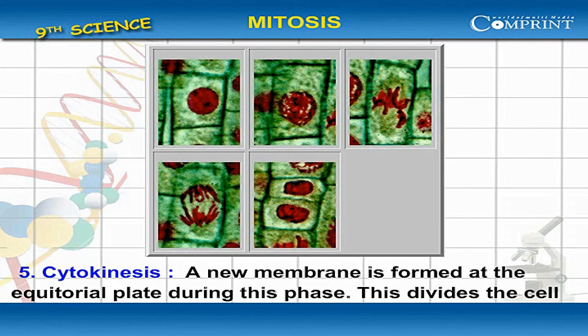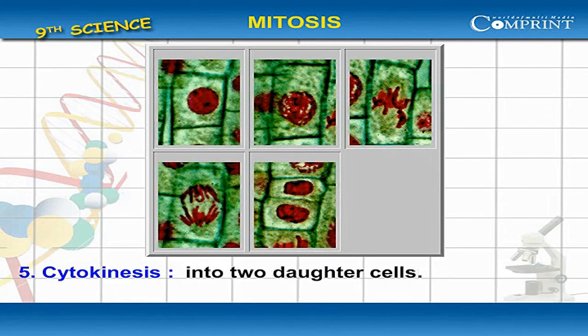Cytokinesis. A new membrane is formed at the equatorial plate during this phase. This divides the cell into two daughter cells.